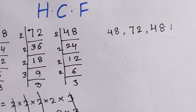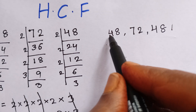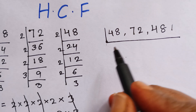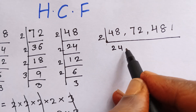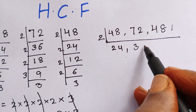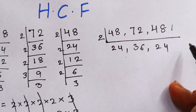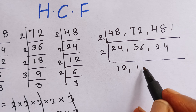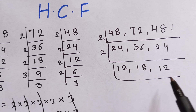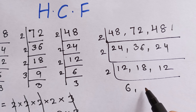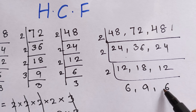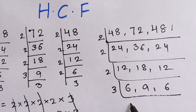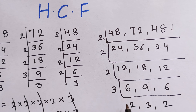One more method: for 48, we can take directly two times two equals four, two times four is eight, two times three is six, two times six is twelve. For the next number, two ones are two, two twos are four, two fours are eight, two eights are sixteen. Then using the three times table: three times two is six, three times three is nine, three times two is six.